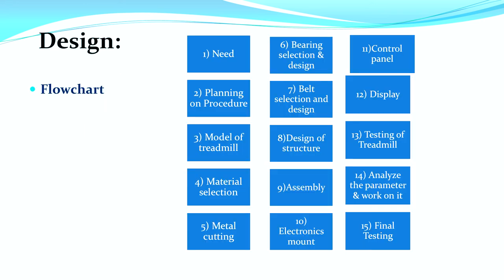This is the design flowchart of our treadmill. First, planning and procedures on how to make the treadmill, then models of the treadmill, material selection, metal cutting, bearing section and design, belt section and design, design of structure, and assembly of parts. Then electronics mounting, control panel to control speed of belt and motor, display to see speed or pulse rate, testing of the treadmill, analyzing parameters, working on them, and finally final testing.